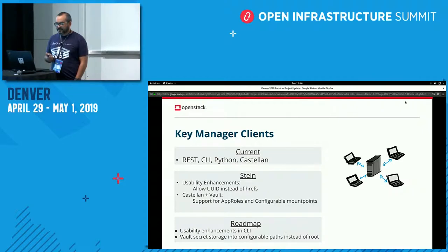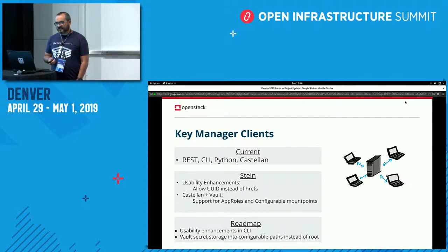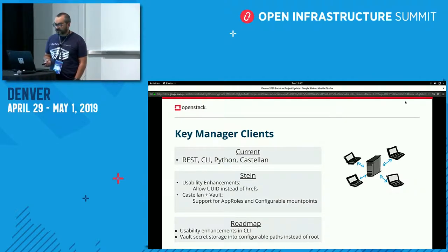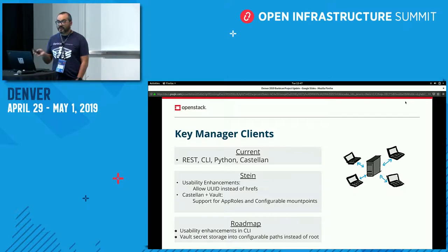As for the clients, the CLI is now able to handle UIDs instead of references, which has been a pain point in Barbican for years, so we're glad to finally have that. The Castellan client with Vault also supports app roles and mount points. There are still a couple of warts on the UID stuff in the CLI that we'll polish off for the next cycle. In my opinion, there's one more feature for Vault needed to make it truly production ready: the ability to configure paths where secrets are actually stored in Vault. Right now, anything you put into Vault gets stored at the root of your mount point, which gets messy with thousands of secrets, and configuring paths would also allow different policies for different Castellan instances accessing your Vault backend.